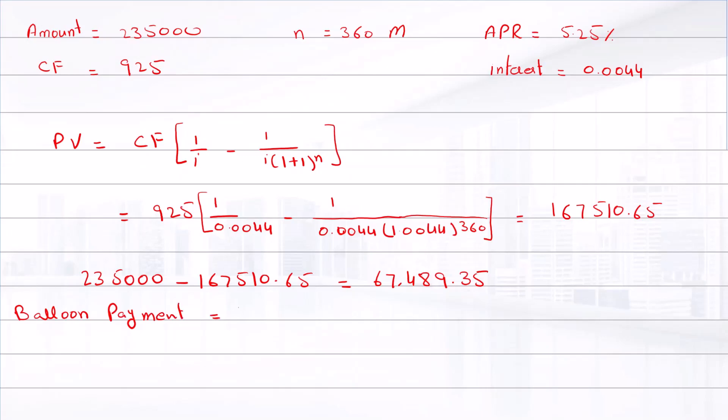...the future value equals present value annuity times (1 plus i) raised to power n. The present value is $67,489.35 times 1.0045 raised to power 360, which equals $324,705.55.